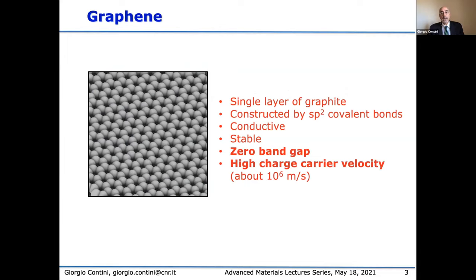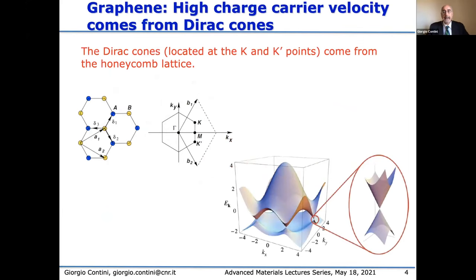We cannot start talking about two-dimensional materials that present Dirac cones without speaking about graphene. Graphene is a single layer of graphite, constructed by sp2 carbon bonds, is conductive and stable, presents a zero band gap, and also high charge carrier velocity of about 10⁶ meters per second. The high charge carrier velocity comes from the presence of the Dirac cone in the structure. This is due to the fact that graphene presents a honeycomb lattice, and this is the Dirac cone obtained in the electronic structure.